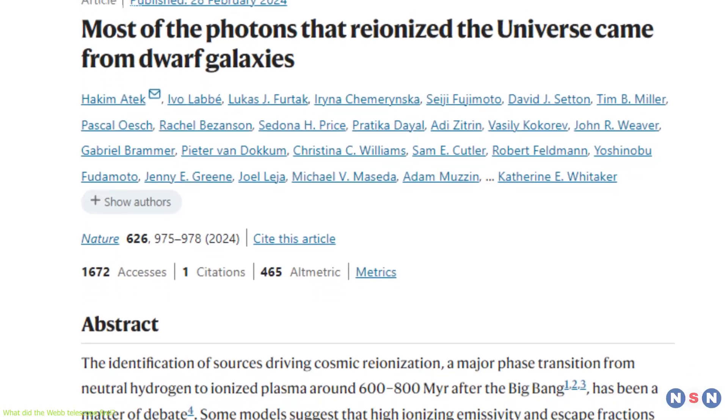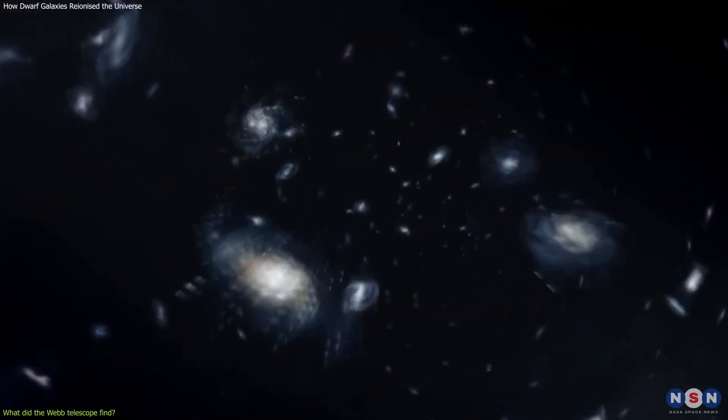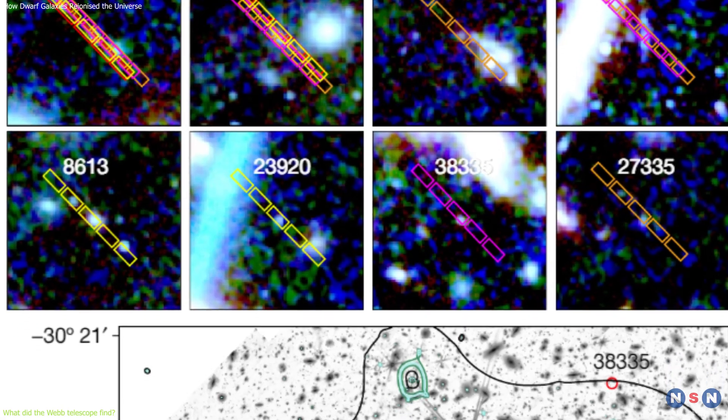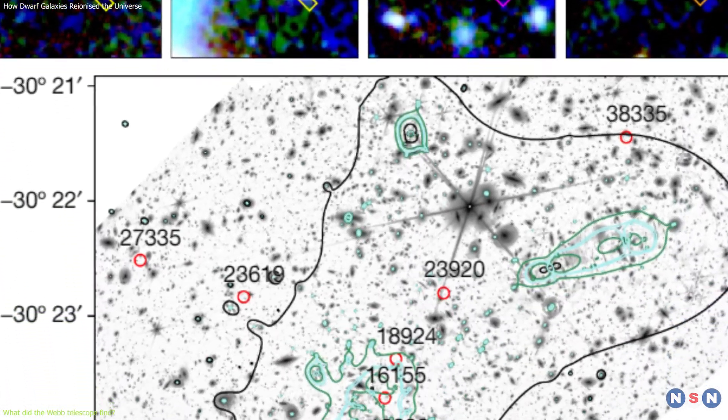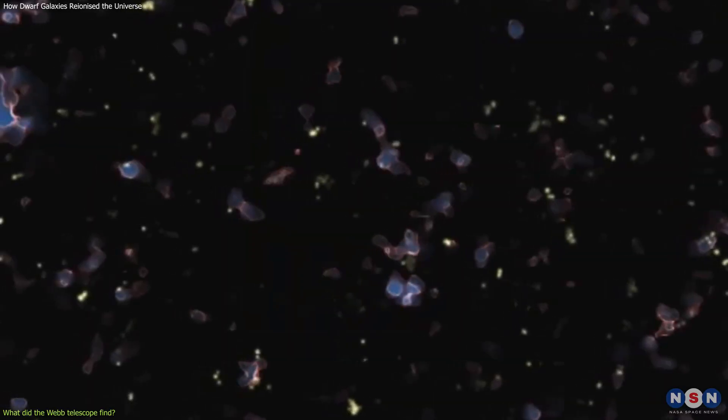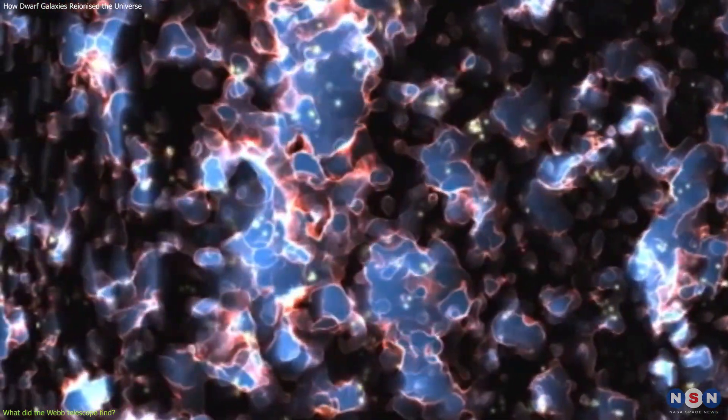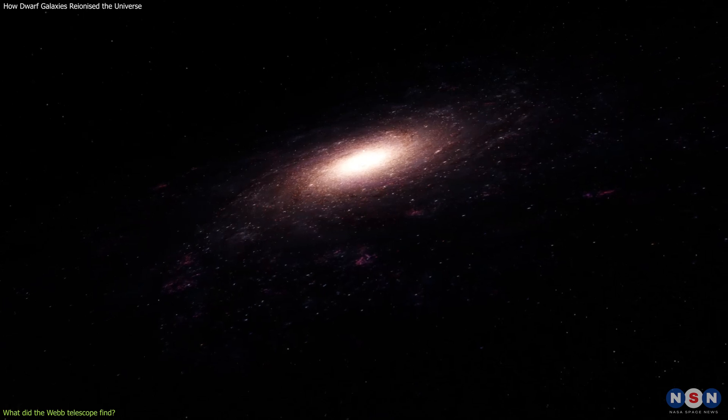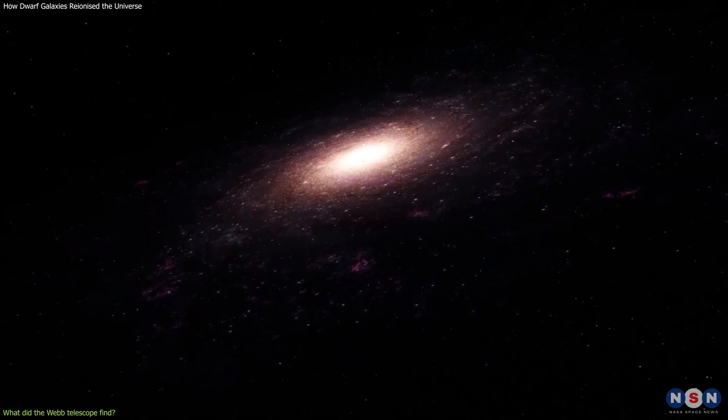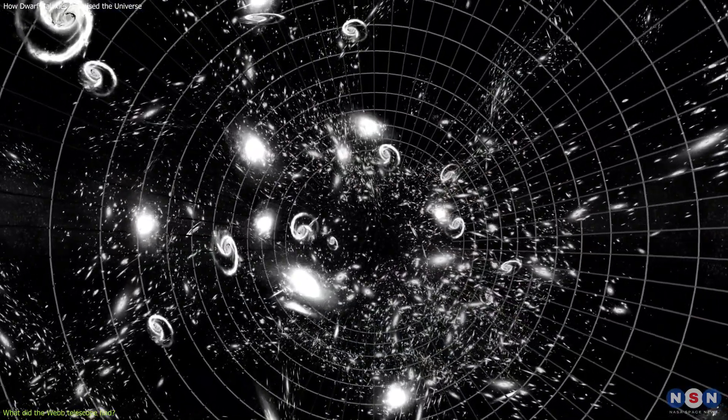This discovery has profound implications for our understanding of the early universe and the role of dwarf galaxies. This discovery unveils the crucial role played by ultra faint galaxies in the early universe's evolution, as they produce ionizing photons that transform neutral hydrogen into ionized plasma during cosmic reionization. It also highlights the importance of understanding low-mass galaxies in shaping the universe's history, as they are the building blocks of larger galaxies and the seeds of galaxy clusters.